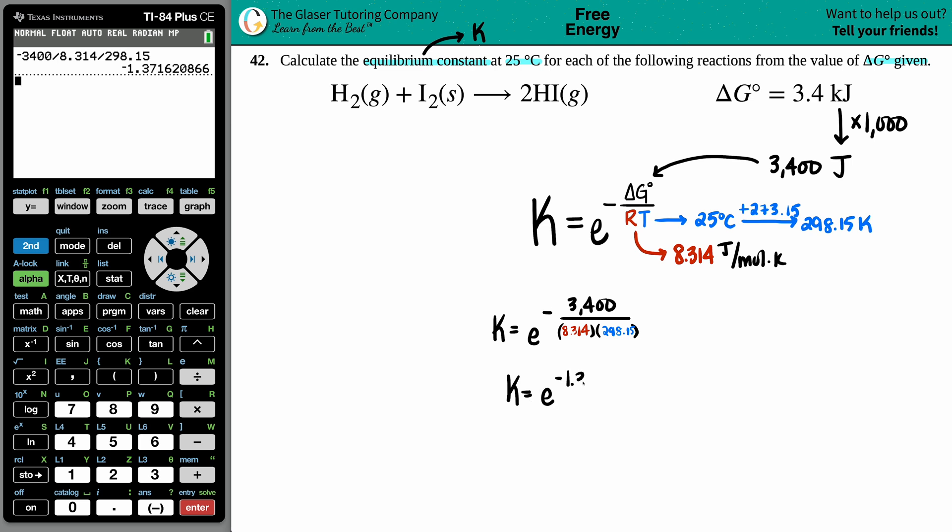There's the overall answer. I'm going to take the e and raise it to the negative 1.3716. Keep in mind that since this is not the final answer, don't round it. When you actually do the calculation, take the full number.